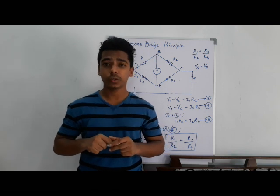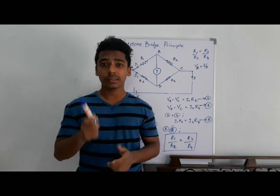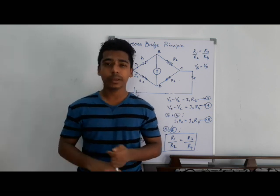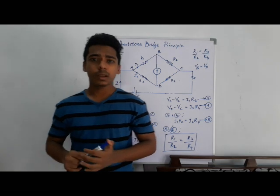Because center zero galvanometer shows zero deflection if no current is passing through it, or else deflection in either side depending on which direction the current is passing through the galvanometer.